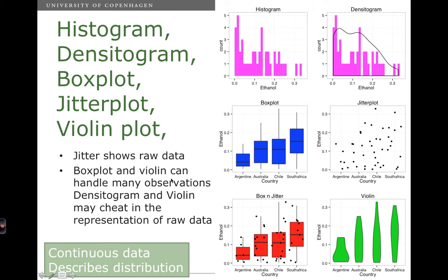The box plot and the violin plot can handle many observations. You cannot see from this plot whether you have ten observations or a thousand observations. And the same goes for this one. But you should know that they can cheat in representation of the raw data. Simply because you don't show it. And it's easy to see up here that you have actually a density. Where there's no observations. So in this area there's no observations. But the density tells you that there is still probability of this observation. So be aware of this limitation.